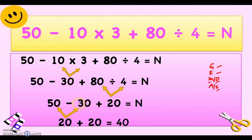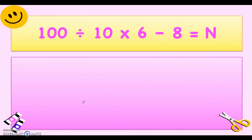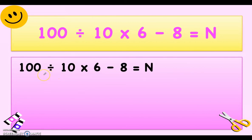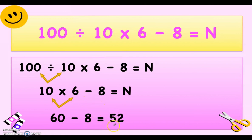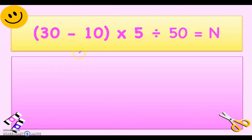Next: 100 divided by 10 times 6 minus 8 equals n. We perform division first: 100 divided by 10 is 10, times 6 minus 8. Then we multiply: 10 times 6 is 60. 60 minus 8 equals 52.